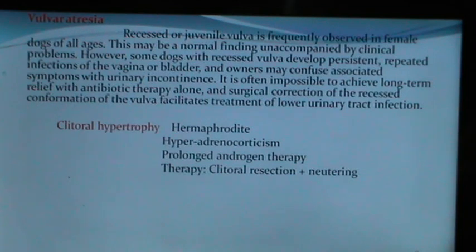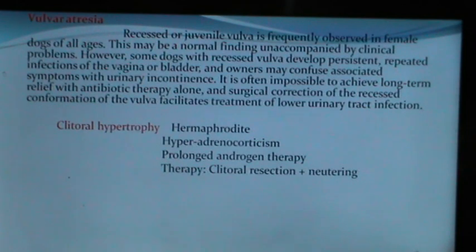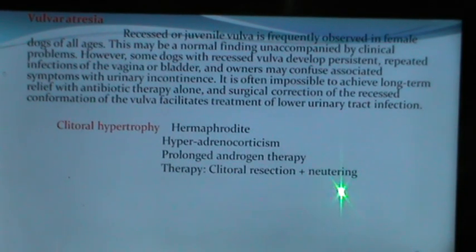Vulva atresia or recessed juvenile vulva is frequently observed in female dogs of all ages and may be a normal finding unaccompanied by clinical problems. However, some dogs develop persistent repeated infections of the vagina or bladder, and owners may confuse associated symptoms with urinary incontinence. Long-term relief with antibiotics alone is often impossible, and surgical correction of the recessed vulva facilitates treatment of lower urinary tract infection. Clitoral hypertrophy may be seen in hermaphrodites, bitches with hyperadrenocorticism, or bitches treated with prolonged androgen therapy.